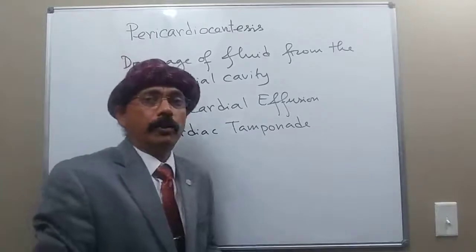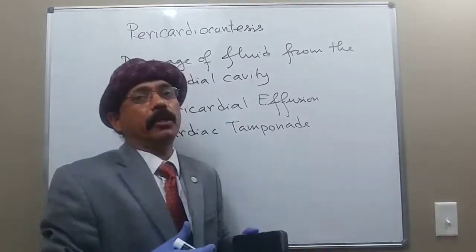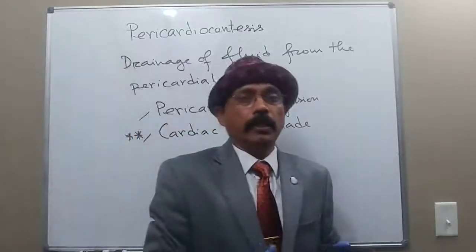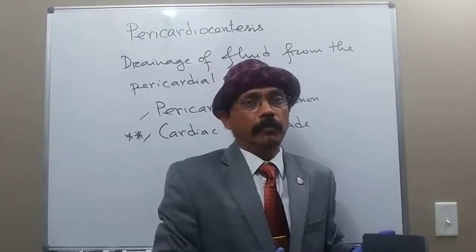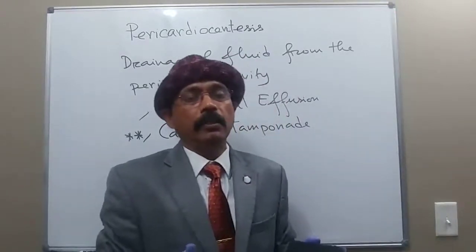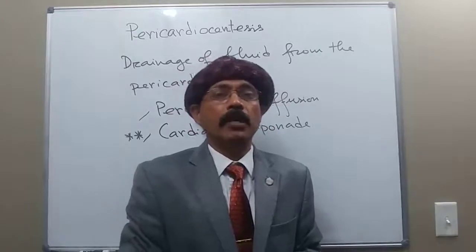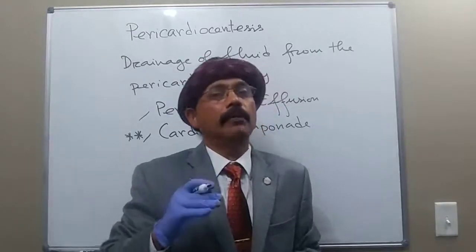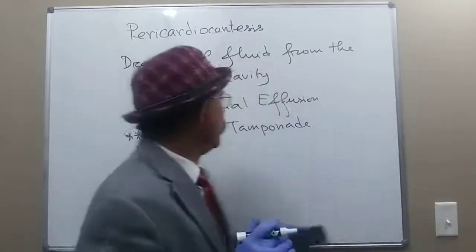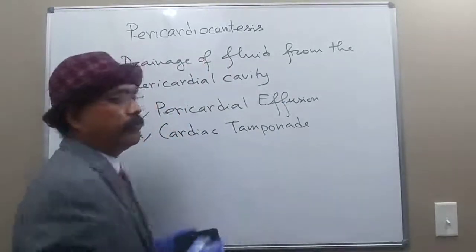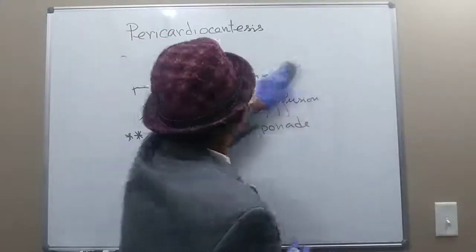Cardiac tamponade is an emergency situation when there is a rapid collection of fluid inside the pericardial cavity that compresses the heart, especially the right atrium and right ventricle, because these are thinner than the left ventricle. The right atrium is compressed, so blood cannot be dumped into it, causing engorgement of the head and neck veins. In cardiac tamponade, pericardiocentesis is urgently needed.